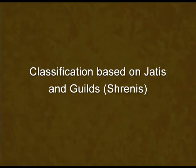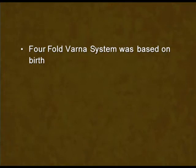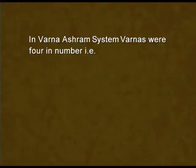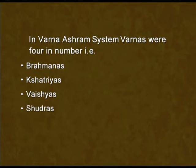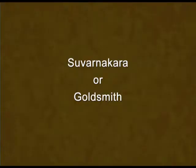The classifications based on jatis and shrenis or guilds are as follows: the fourfold Varna system was based on birth. Jatis were also based on birth, and guilds were those jatis having a common occupation. In the Varnashram system, Varnas were four in number — Brahmanas, Kshatriyas, Vaishyas and Shudras — whereas jatis were many in number. Those who did not easily fit into the fourfold system were incorporated into jatis, such as new groups the Brahmanical authorities encountered, like the Suvankar or Goldsmith.